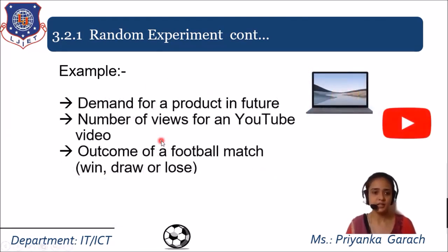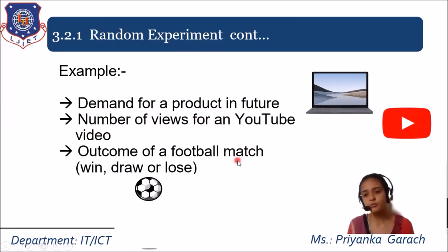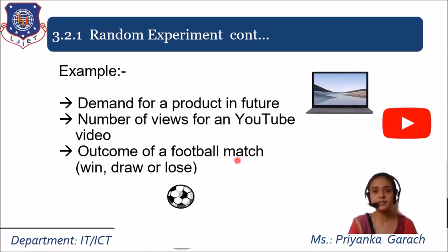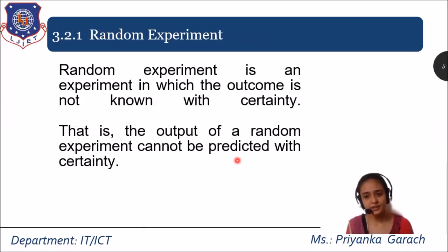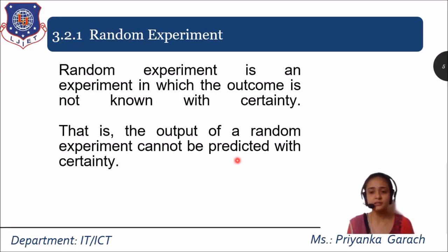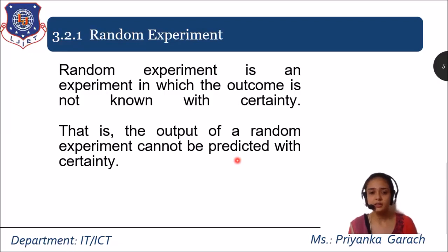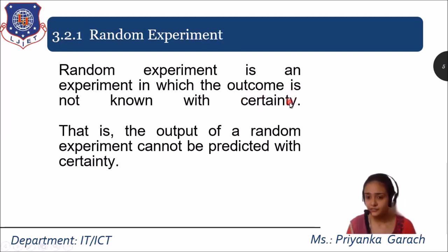Other examples of random experiments include demand of a product in the future, the number of views for a YouTube video, and the outcome of a football match — whether it will be a win, draw, or loss. These are all examples of a random experiment, which is an experiment in which the outcome is not known with certainty. We cannot predict with certainty whether a team will win, lose, or draw, nor can we predict customer behavior based on application ratings.